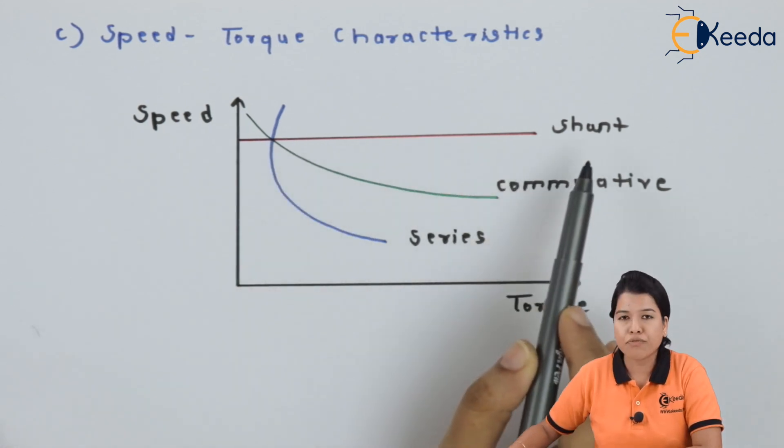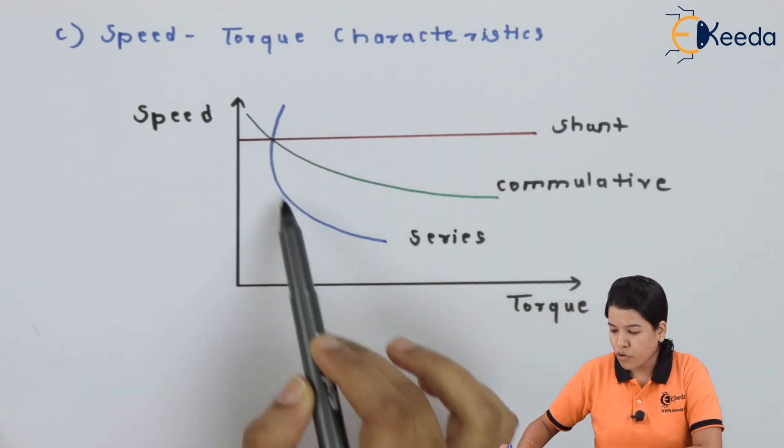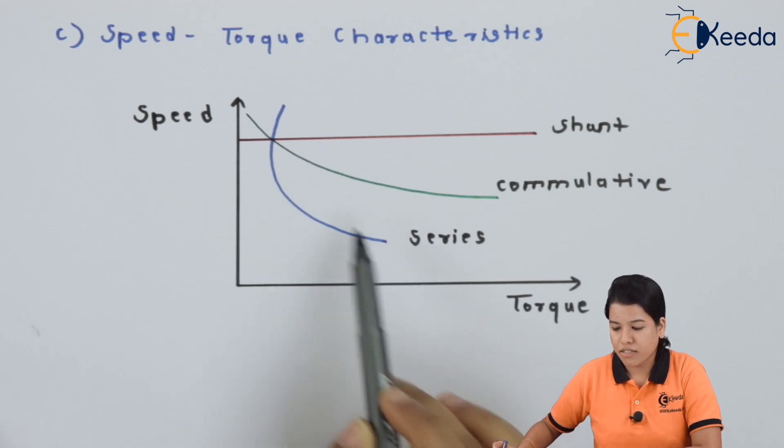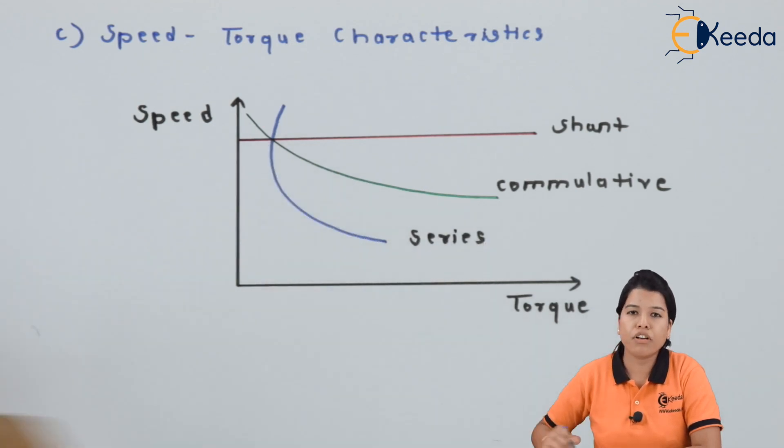The line shown by red color is for shunt. Shown by the blue color is for series. And shown by the green color is for cumulative motor.